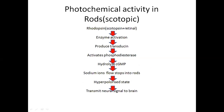In the rods, the photochemical activity — known as scotopic vision — involves rhodopsin, a combination of scotopsin and retinal. When light strikes, transducin is activated, which in turn activates phosphodiesterase. Phosphodiesterase causes hydrolysis of cyclic GMP, which stops the flow of sodium ions into the rods. This stoppage results in hyperpolarization, which in turn generates a neural signal transmitted to the brain as an action potential passing through the retinal layers.